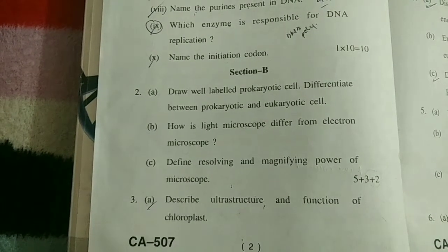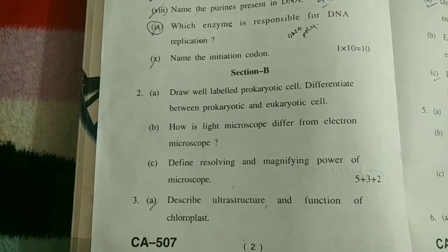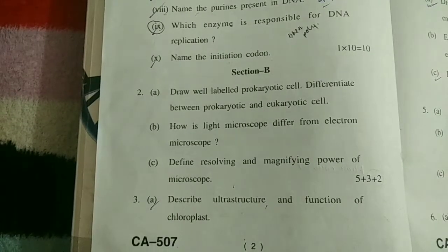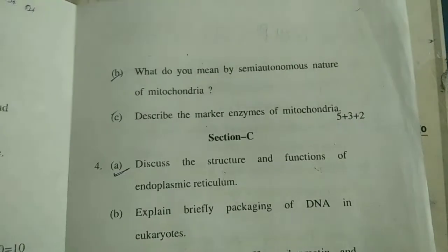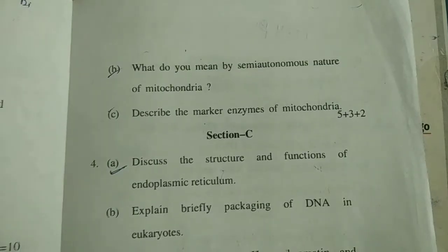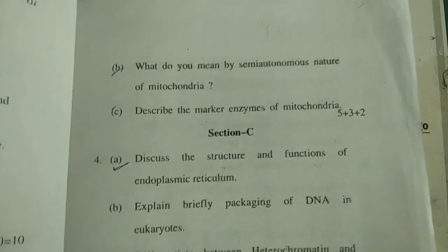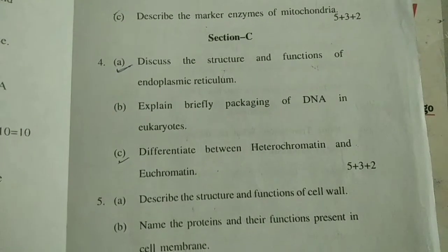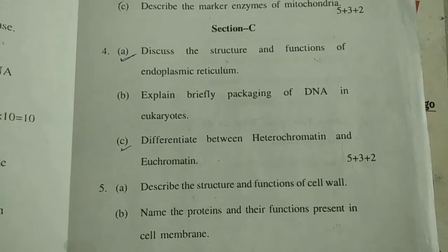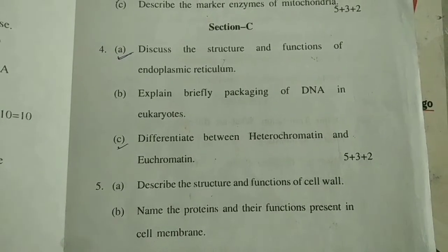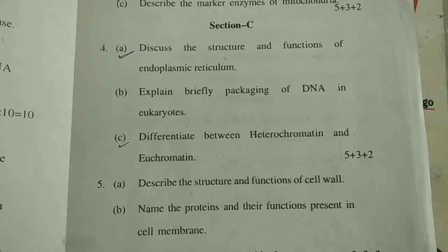In Section B, we get two questions and out of these two we have to choose one. This is the B and C part of Section B. This is Section C, which also has two choices and we have to do one.